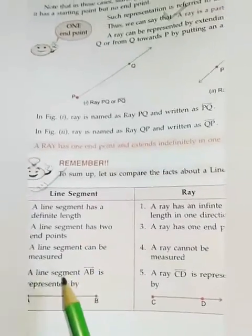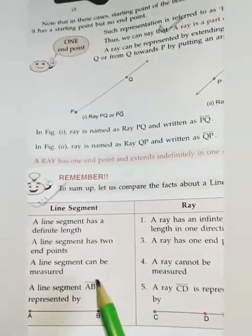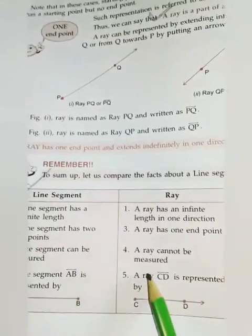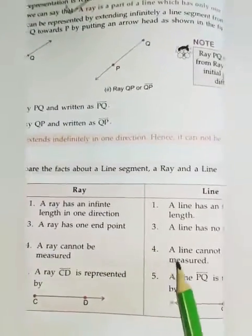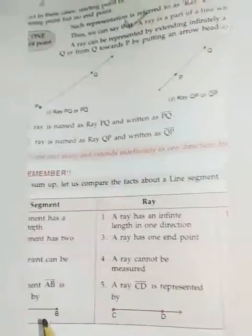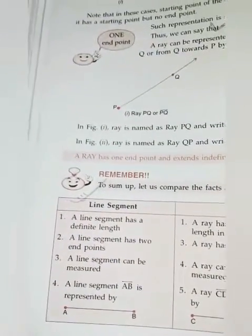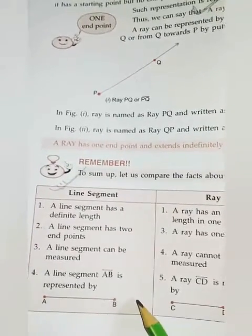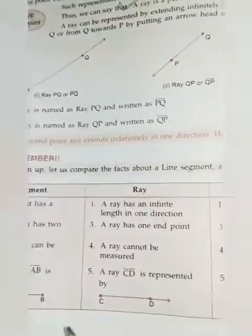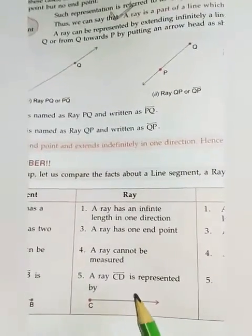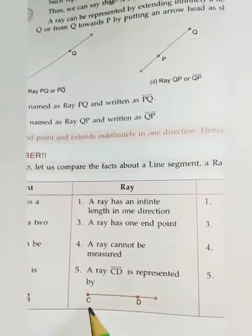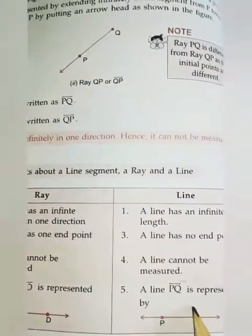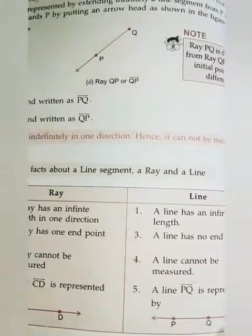Then number three: a line segment can be measured. A ray cannot be measured. A line cannot be measured. Then fourth point: a line segment AB is represented like this. Then a ray CD is represented like this. And a line PQ is represented like this.